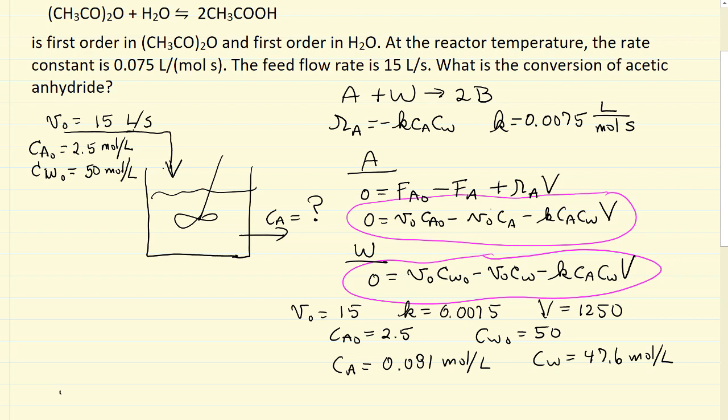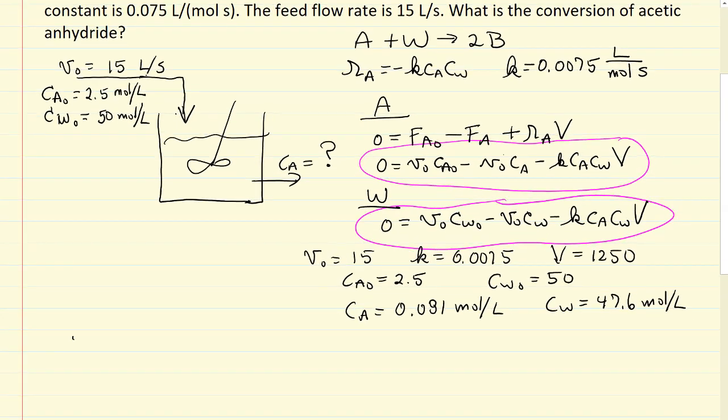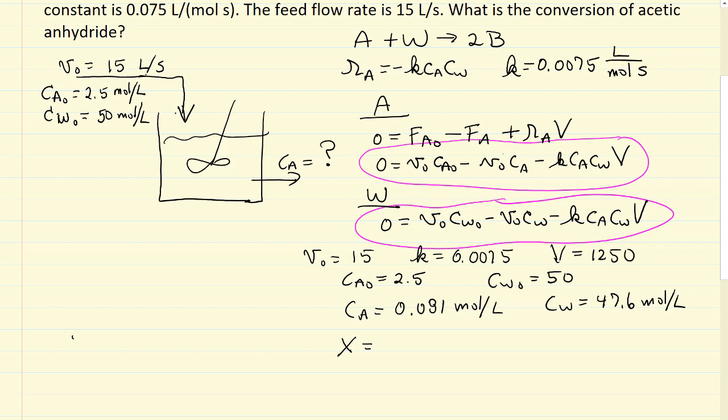I can calculate the conversion from those numbers. The conversion of A, since that's the reactant we're interested in and the limiting reactant, when it's a constant volumetric flow rate, it's how much reacted over how much entered the reactor. So we substitute these numbers. The conversion, which is what we're interested in, is 0.97 to two significant figures. So 97% of this acetic anhydride is converted in this CSTR.